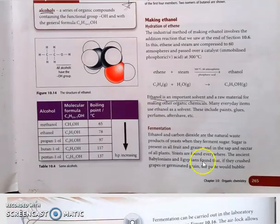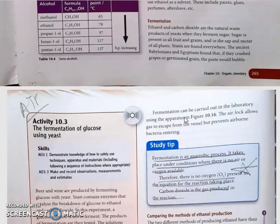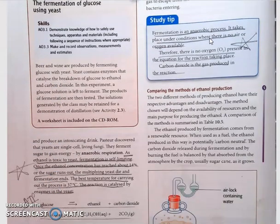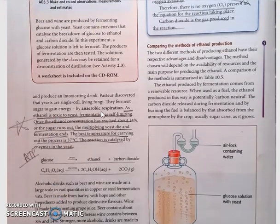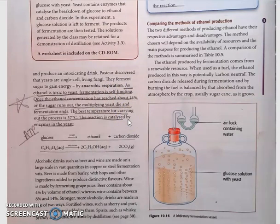This is another method: on the industrial process level, ethanol can be produced by reacting ethene with steam, and it can also be produced by fermentation process. Ethanol and carbon dioxide are natural waste products of yeast when they ferment sugar using glucose and yeast. The enzymes of the yeast are the catalyst. When ethanol reaches about 14 percent, the sugar runs out, the yeast die, and fermentation ends. The temperature needed is 37 degrees Celsius, catalyzed by enzymes in the yeast.